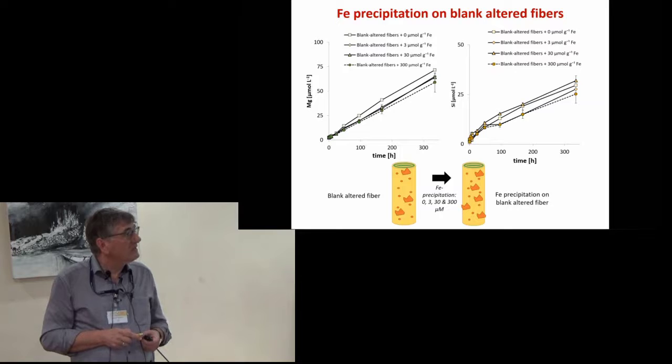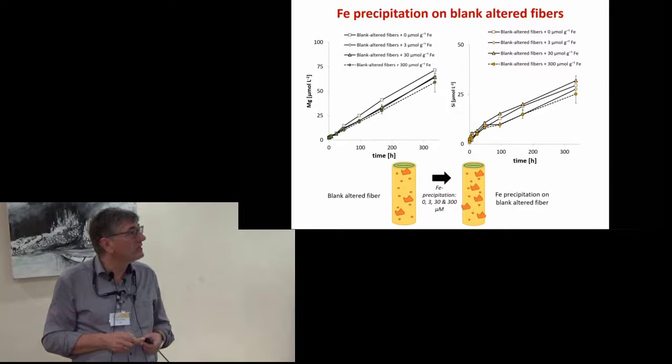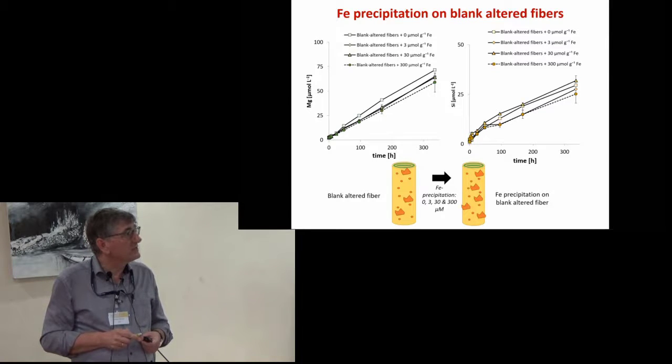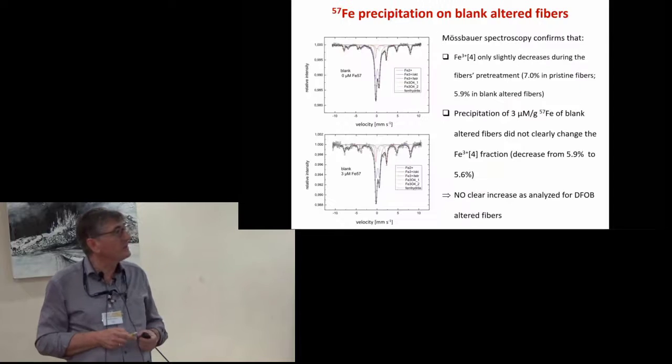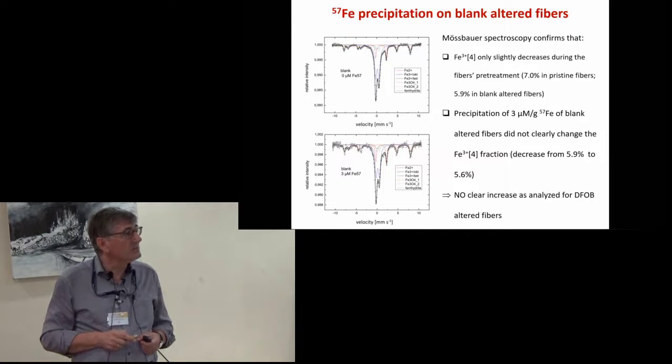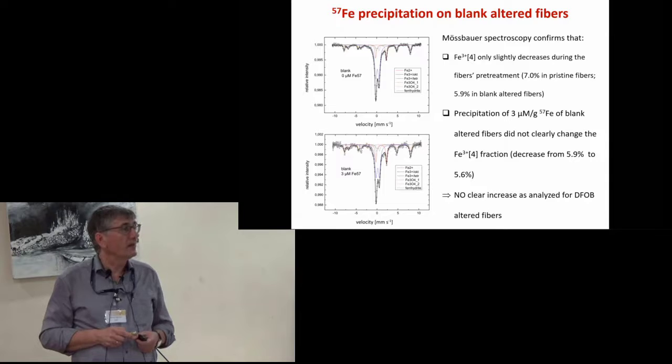The mobilization of magnesium and silicon in case of blank altered fibers is much smaller, going only up to 75 and 35 micromoles per liter. This is caused by the absence of vacancies in the blank altered fiber. Therefore, the precipitation of 300 micromole extra iron on the fiber surface decreases the dissolution rate much less than in the case of DFOB altered fibers. This is again confirmed by Mössbauer measurements. The tetrahedrally coordinated ferric iron atoms only slightly decrease from 7% in pristine fibers to 5.9% in blank altered fiber, and precipitation of three micromoles per gram extra iron did not really change the tetrahedral iron amount—only from 5.9 to 5.6%.